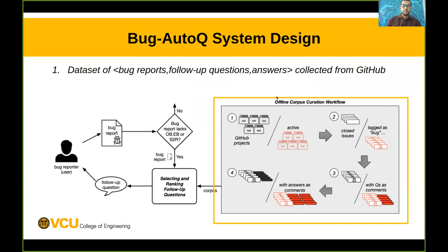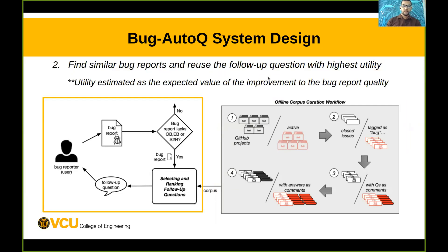Our system design uses an offline corpus. This offline corpus comes from GitHub. We collect a dataset from GitHub — this dataset is a collection of triplets: a triplet of bug report, follow-up questions, and their answers. When a user posts a bug report, we first check whether the bug report is missing some kind of information. When it is missing information, we find similar bug reports and use the follow-up questions with the highest utility. Utility is estimated as the expected value of the improvement in bug report quality.